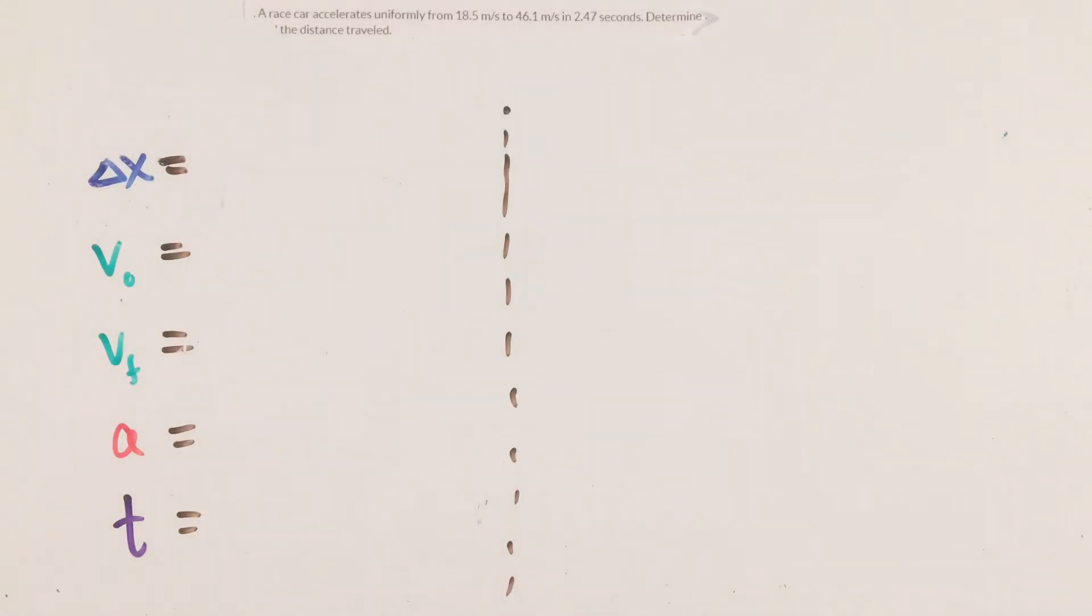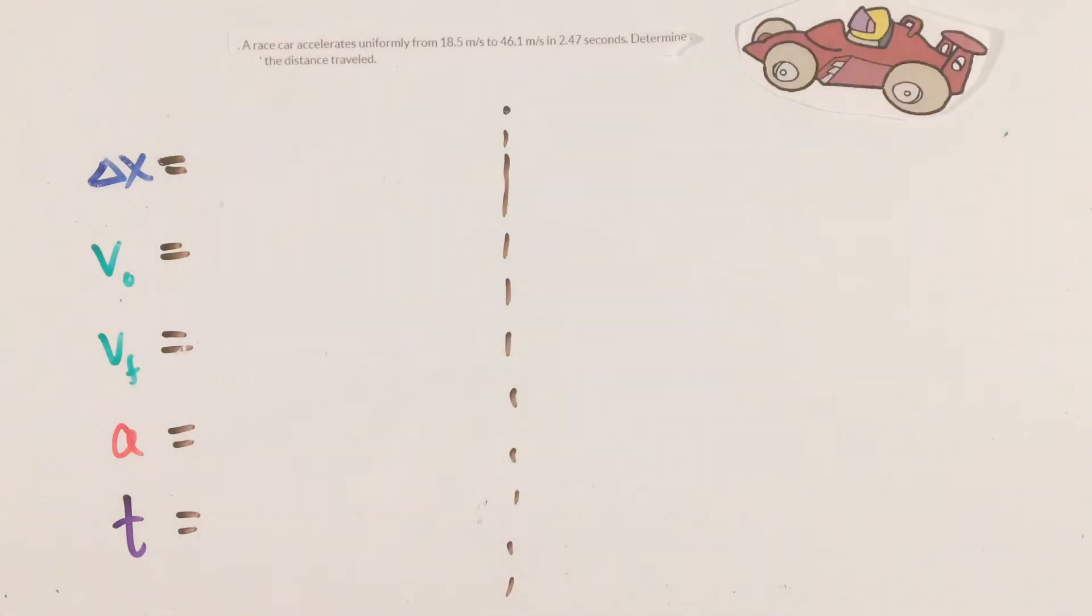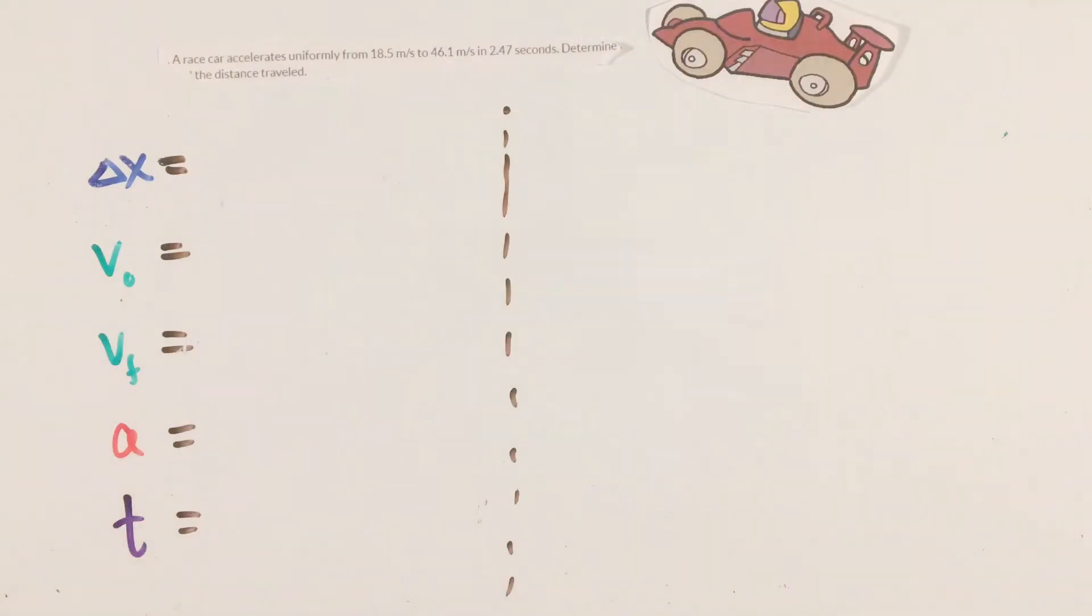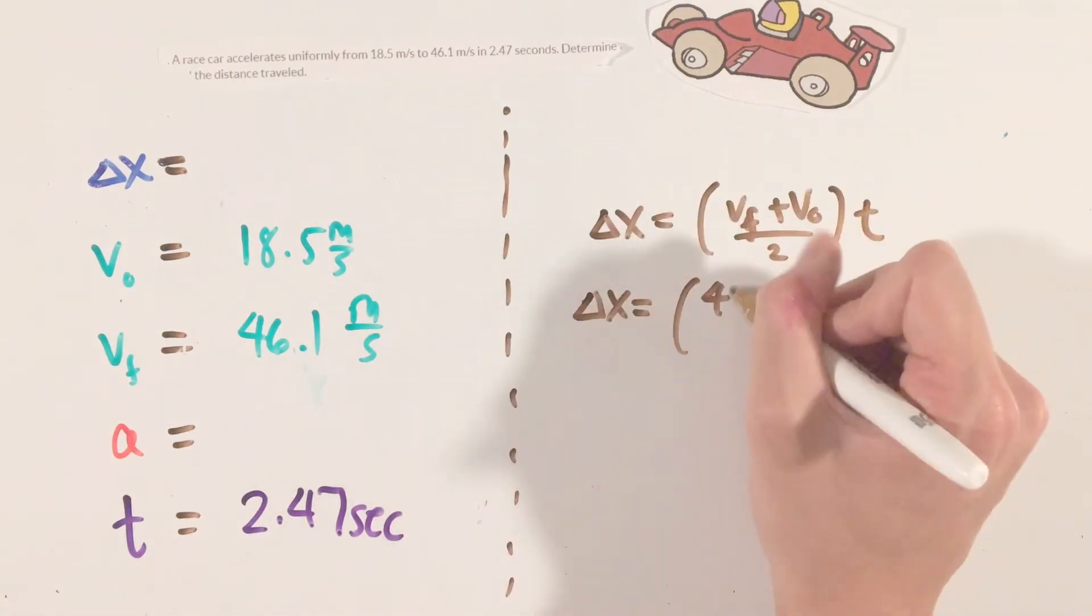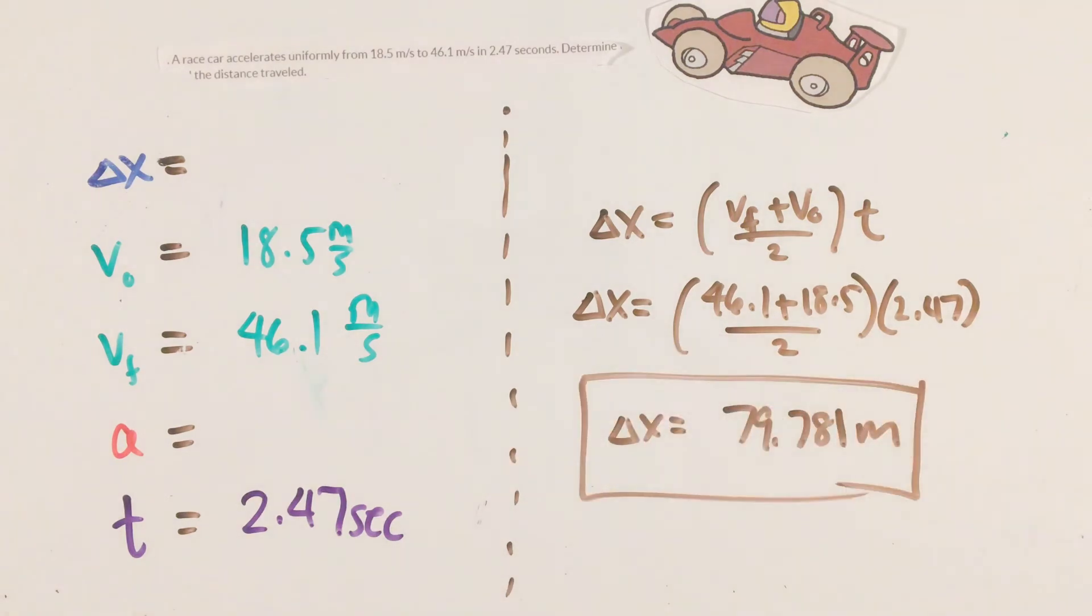An identical process can be applied to this problem here, which asks us for the distance a car travels given its initial and final velocity, as well as the length of time it travels for. Once again writing our list of variables, a perfect equation to apply here would be equation 2, which contains all of the variables given except for the change in position, or the variable being asked for.